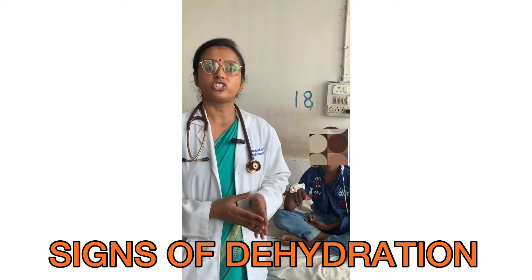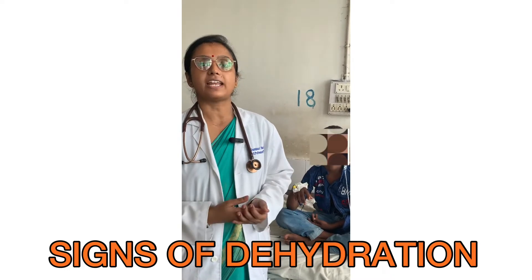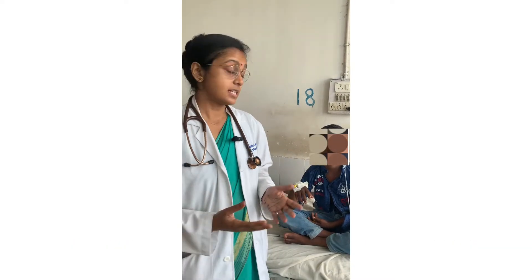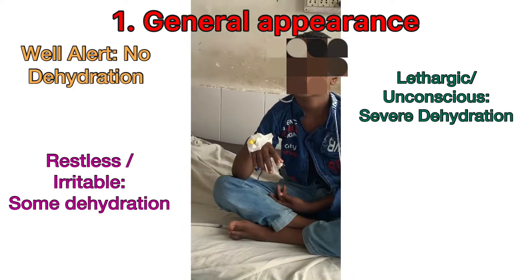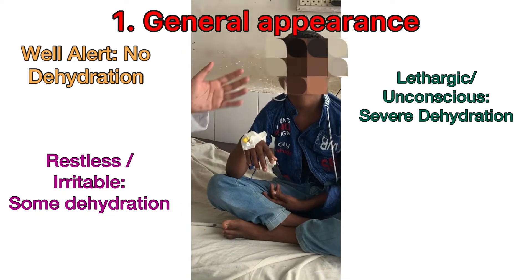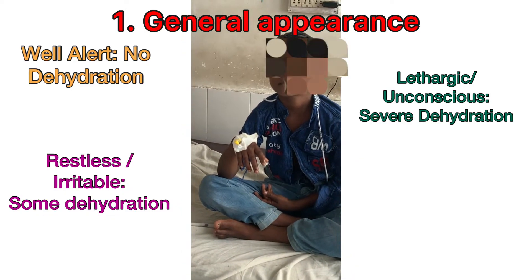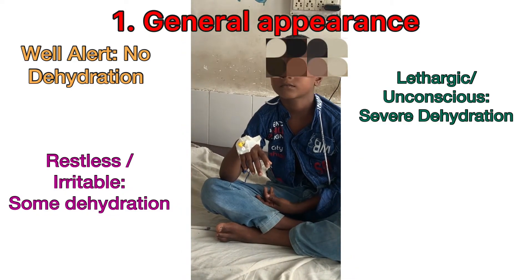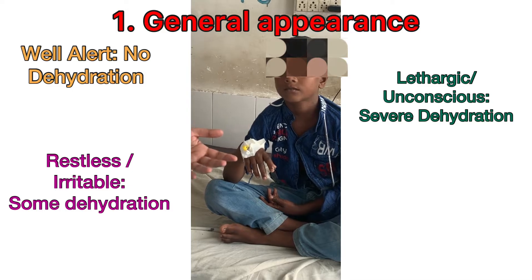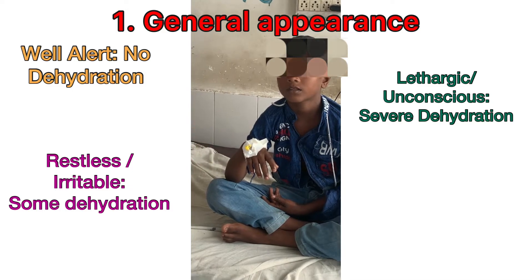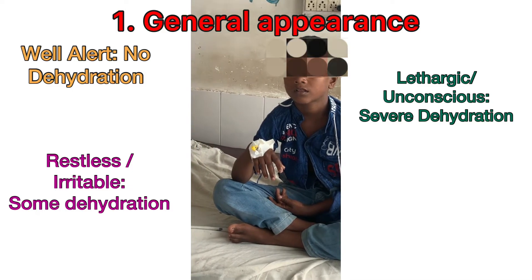Today I will explain how to check the signs of dehydration in a child. This is very important. Look at the general appearance of the patient — if the patient is alert, or if he is restless or irritable, or if he is lethargic and unconscious.